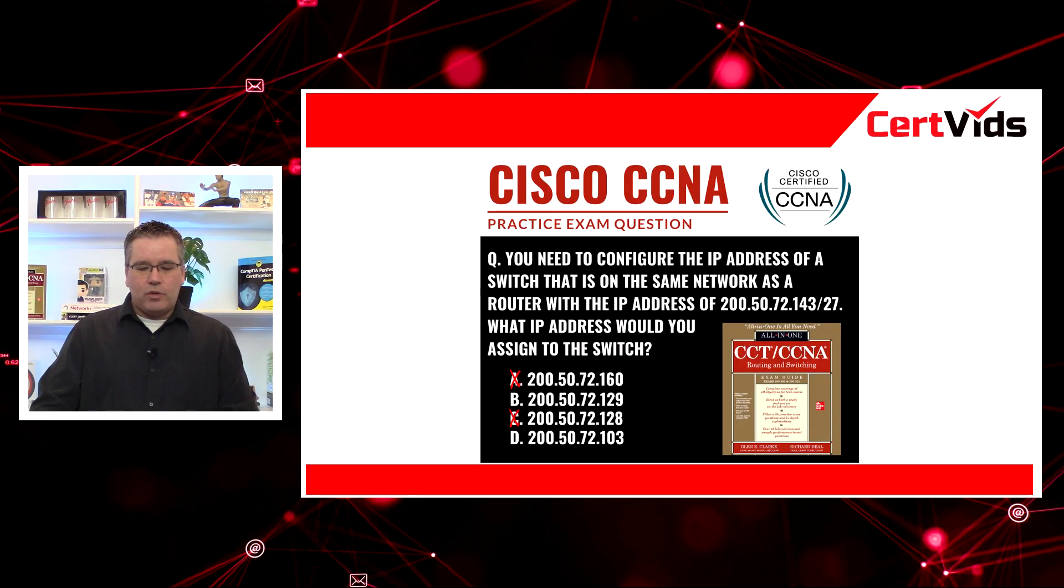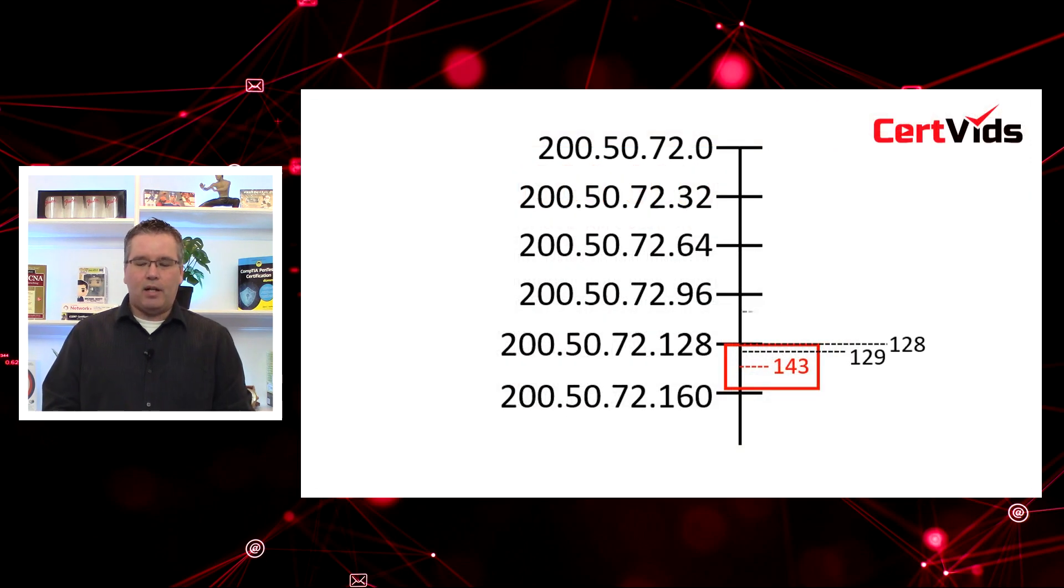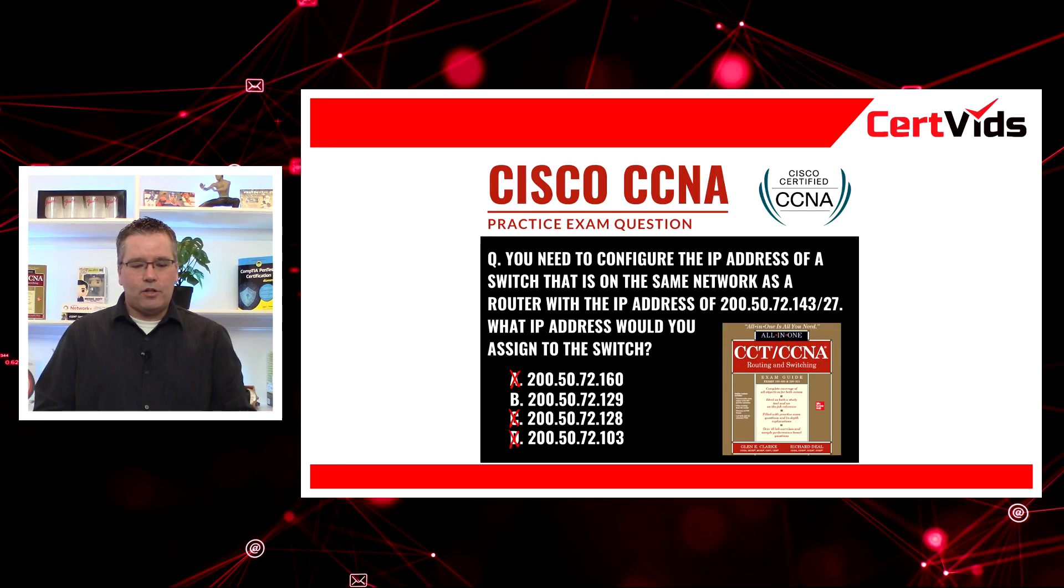And choice D, if I look at choice D 103, 103 is below the number of 128. So 103 would actually appear in the previous subnet. So it's not the correct answer either because it's on a different subnet. So looking at our choices, 200.50.72.129, which is choice B, is the correct answer to this question.